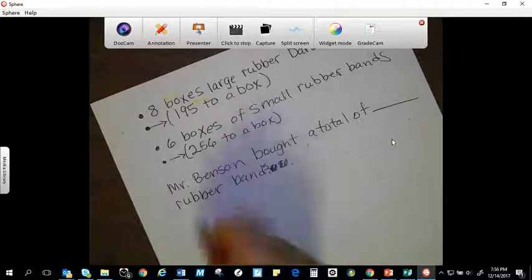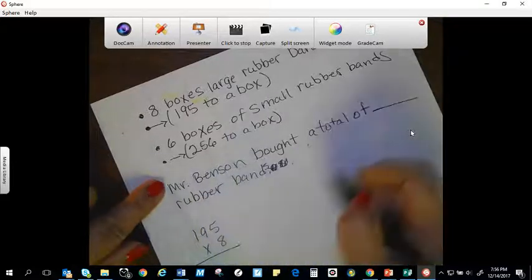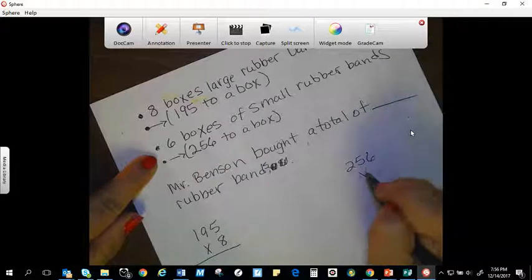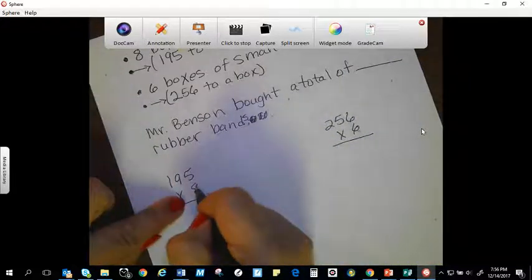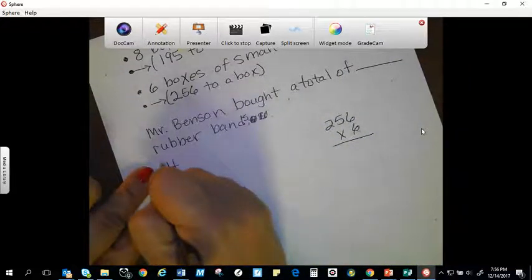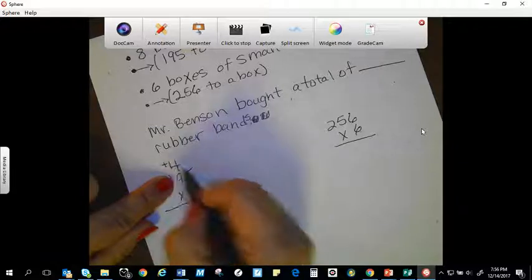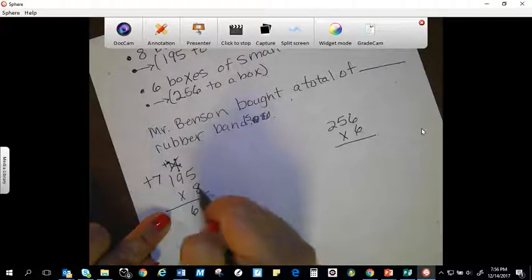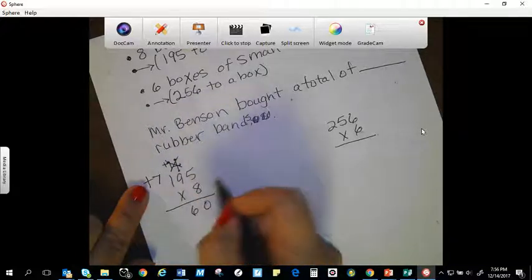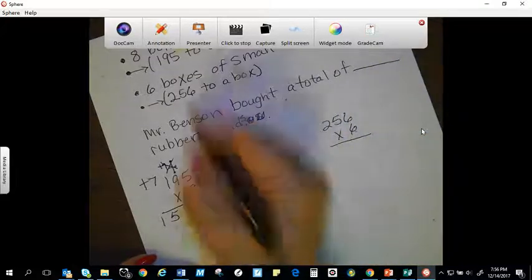All right. And so now I'm going to take my 195 times my eight, taking my 256 times my six. And then I'll need to add my two products together. Eight times five is 40. Carry my four, put a plus sign. Eight times nine is 72, plus four. So 72, 73, 74, 75, 76. Plus seven. Cross this out. Eight times one is eight, plus seven. And so what is eight plus seven? You're right, it's 15. And I have that one. Now this is for the large.